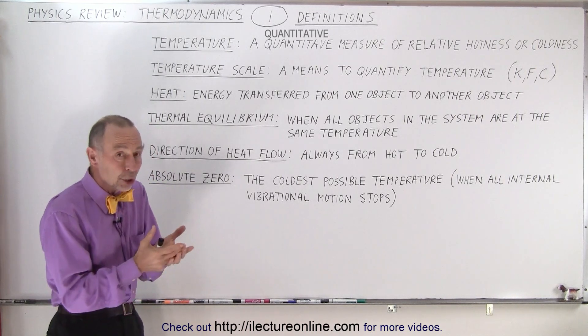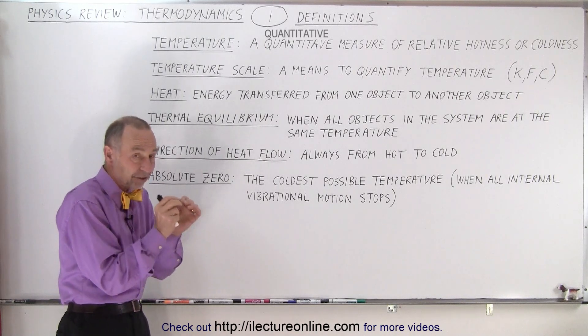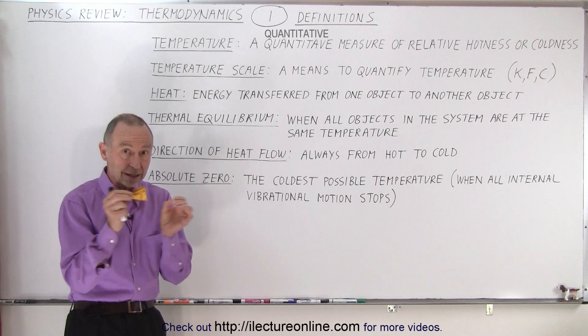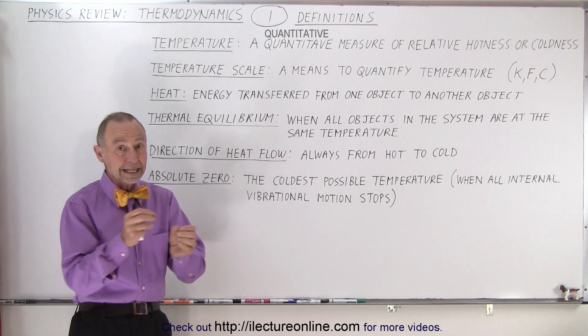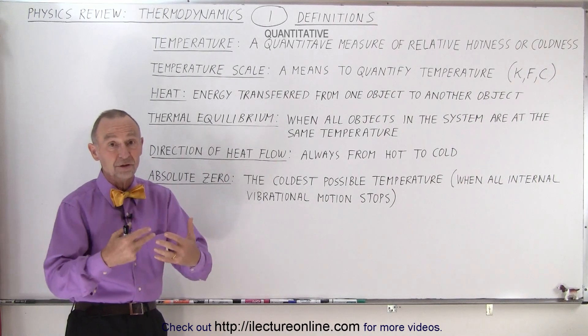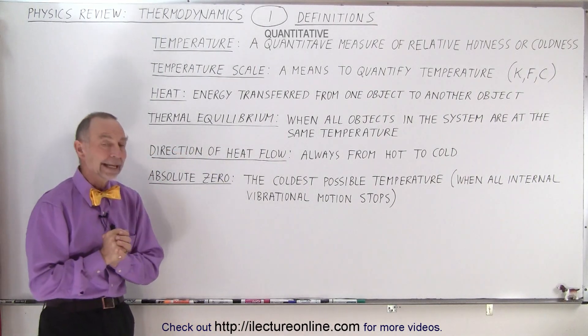But essentially, if we could, that is where all the internal motion of an object would stop, because it's the internal motion of the object, the atoms vibrating back and forth, that generate the internal energy. So there's no longer any motion, there's no longer any internal energy, and that is the coldest temperature that can exist in the universe.